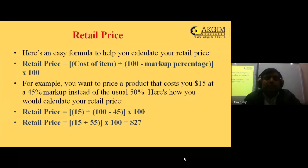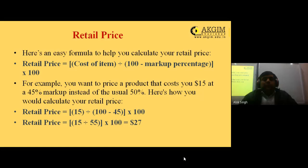For example, if you want to price a product that cost you $15 at a 45% markup instead of the usual 50%, you calculate: $15 ÷ (100 − 45) × 100 = $27. So you should offer it for $27. Instead of applying a straight keystone 50% markup, you have applied a 45% markup — that is setting the right retail price.